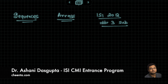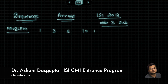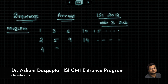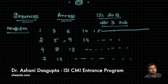First let me tell you what the problem is. We have an infinite matrix of numbers that looks like this: the first row is 1, 3, 6, 10, 15, and so on. The second row contains 2, 5, 9, 14, etc. Then we have 4, 8, 13, and so on. Then 7, 12, and so on — and each of these rows goes on infinitely.